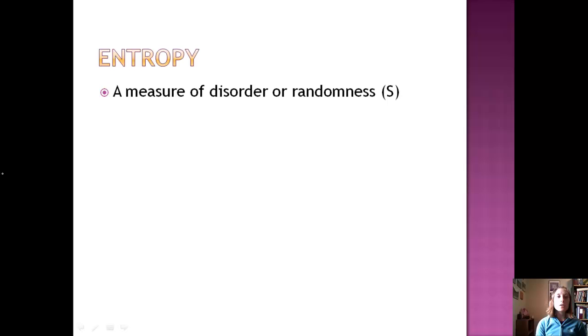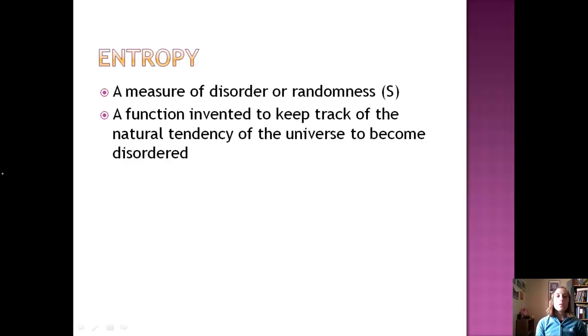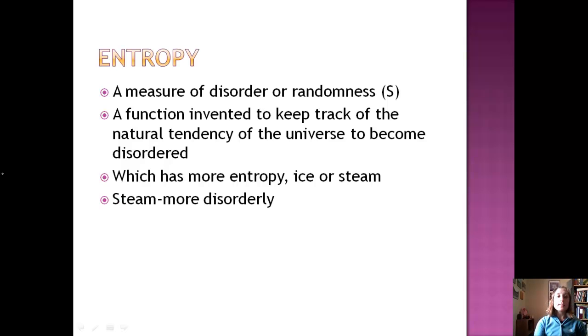Let's look at one last factor, which is entropy. Entropy is a measure of disorder or randomness in the universe, and we use the capital S as the symbol for entropy. A function invented to keep track of the natural tendency of the universe to become disordered. Which has more entropy, ice or steam? We've got ice, which is a solid. The particles are very packed. They're not moving very much. We have steam, which is a vapor, lots of energy. The particles are moving around a lot. And so we would say that steam is more disorderly. It has more entropy.